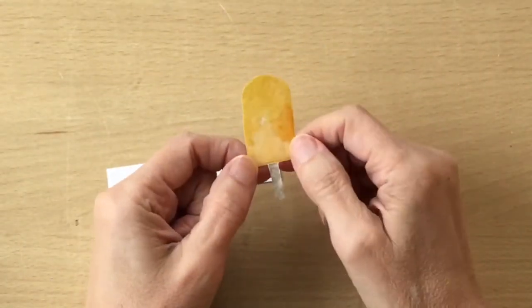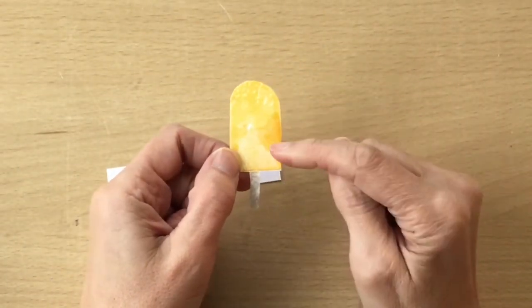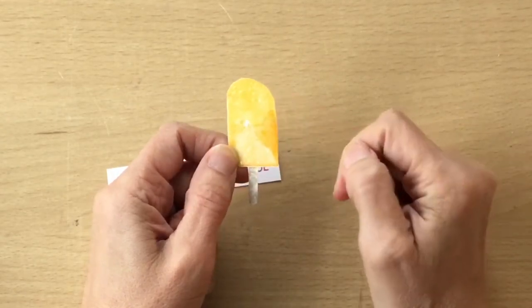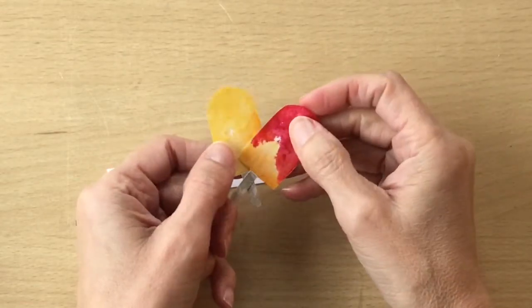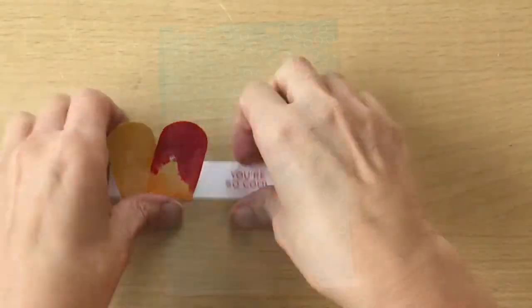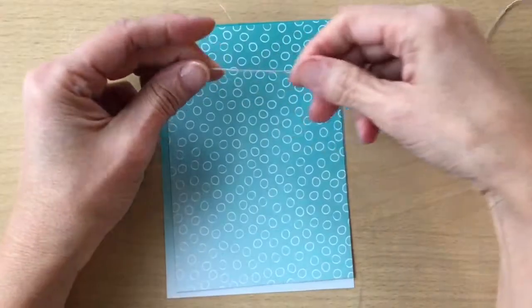And I've also stamped another lolly and I've done this in Crushed Curry and Daffodil Delight, so we're going to have both of our lollies on the front of our card like so. I have some linen thread.